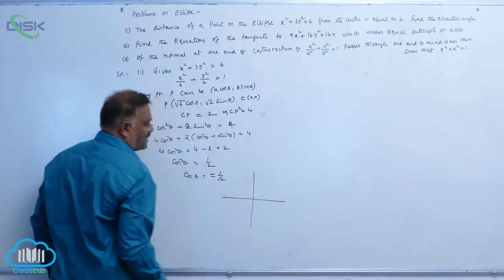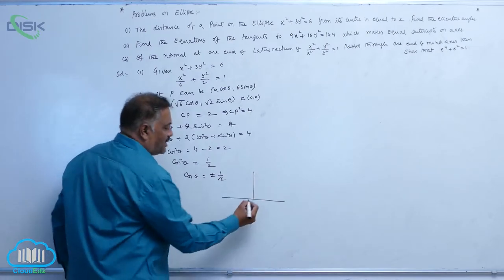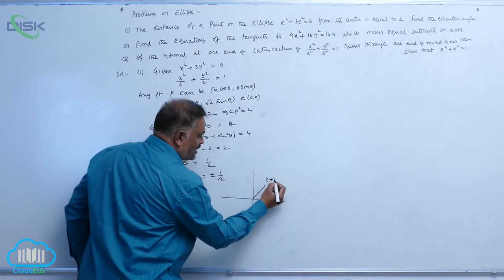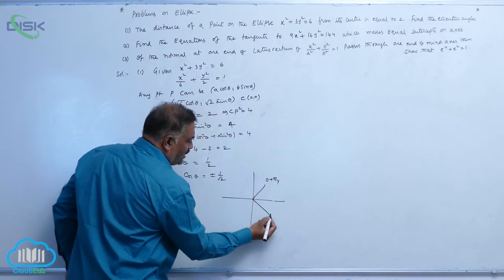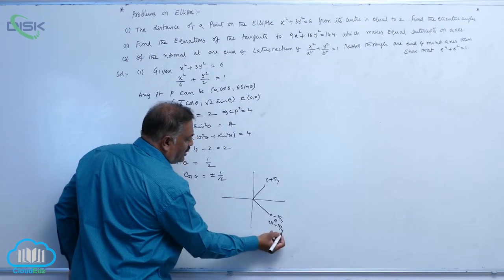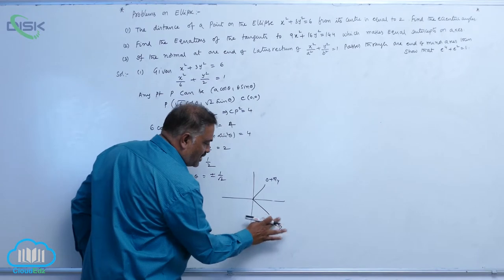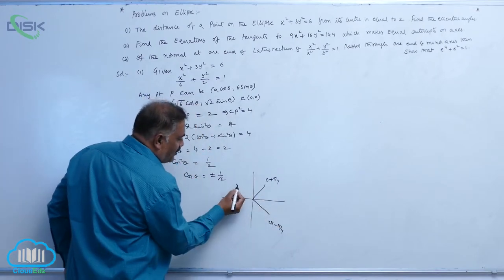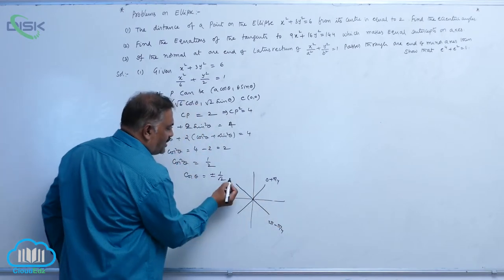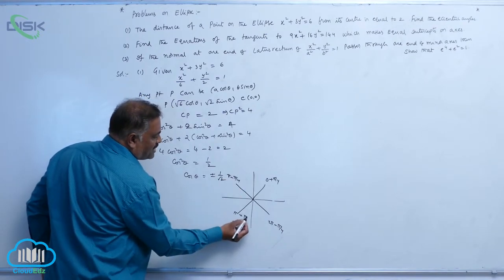If you take the coordinate axis, cos is positive in first and fourth, that is at 0 plus pi by 4 and 0 minus pi by 4 or 2 pi minus pi by 4. Because you are talking about 0 to 360, let us avoid this one. And negative in second and third quadrant, this is pi minus pi by 4, it is pi plus pi by 4.